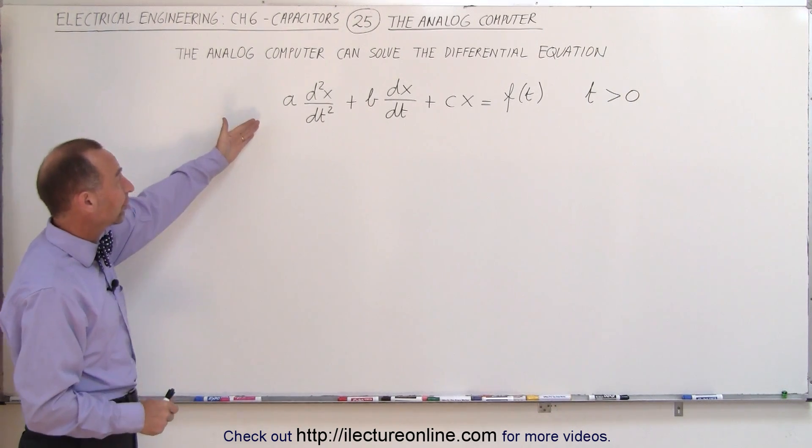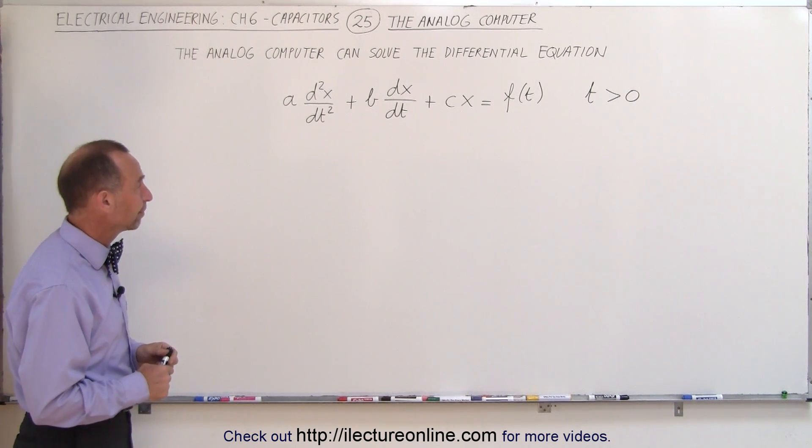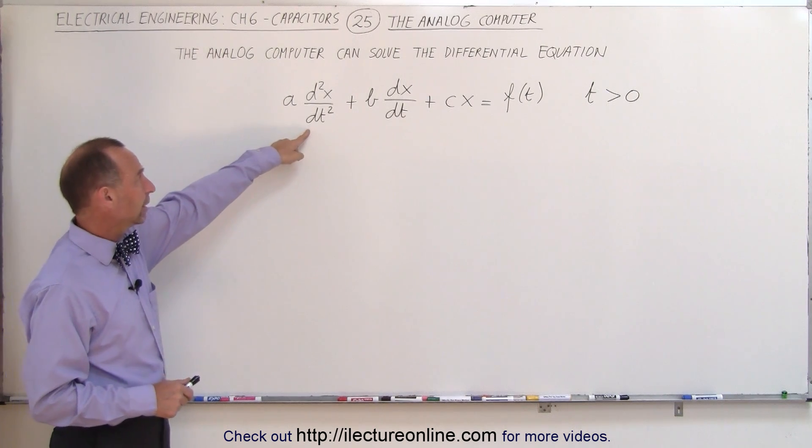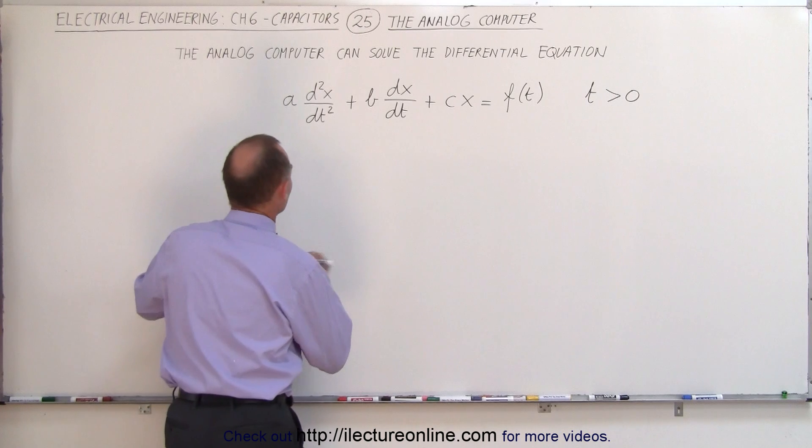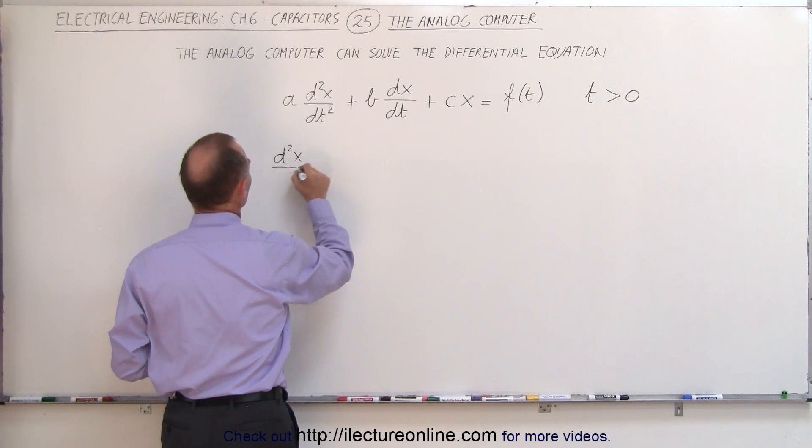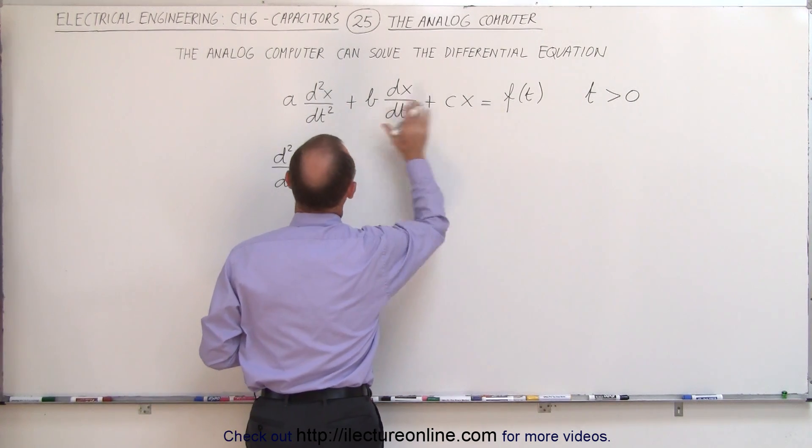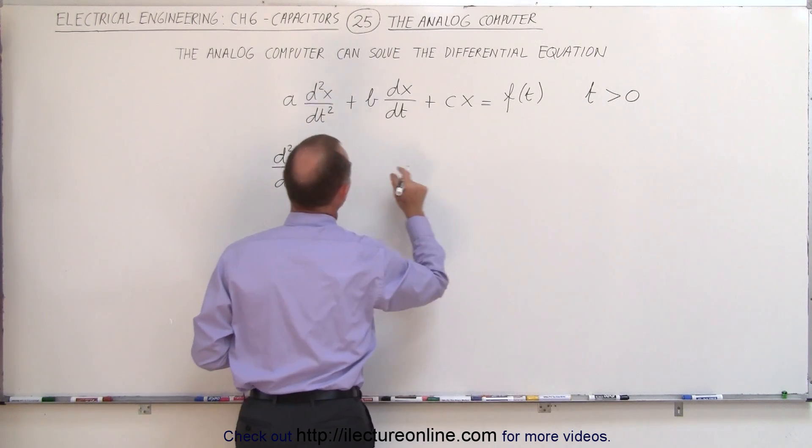Let's take the second order differential equation in the general format. This is a non-homogeneous equation. Let's solve this equation for the second derivative of x with respect to time and see what that looks like. So this can now be written as the second derivative of x with respect to time is equal to, dividing both sides by 1 over a and moving this over to the other side, I will get the following.